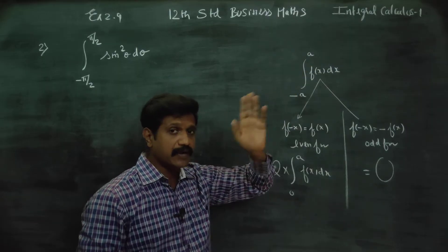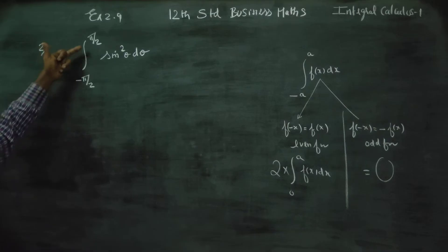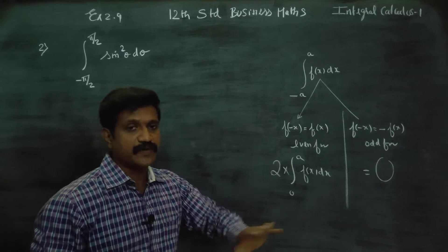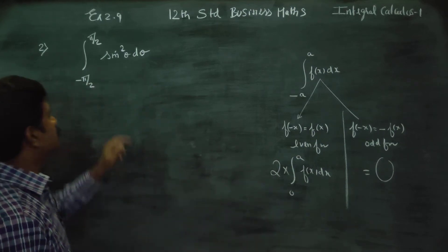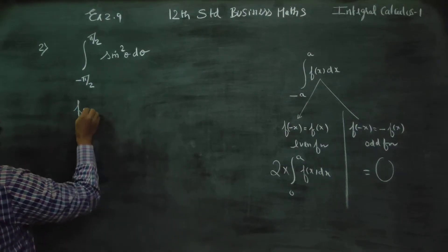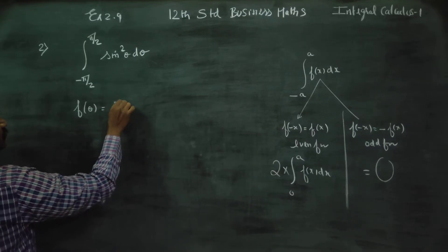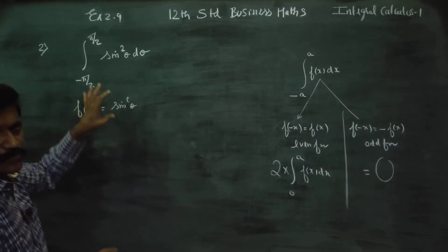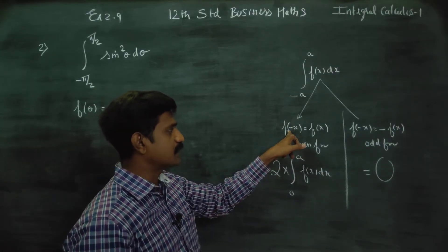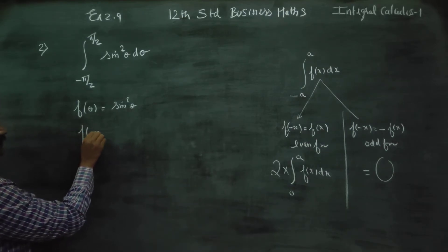This is the property of definite integral we will use for this sum. The limits here are minus pi by 2 to pi by 2 — same type, symmetric. Now we need to check whether f(θ) = sin²θ is even or odd. Wherever x appears, substitute minus x; here wherever theta appears, substitute minus theta.